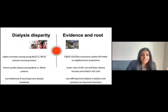In dialysis, the same patterns persist. There is higher mortality among young Black versus white individuals receiving dialysis. Poor quality dialysis has been linked to neighborhood composition and the kinds of resources in certain racial and ethnic minority neighborhoods versus others. The same patterns have been shown in terms of less likelihood of receiving home dialysis modalities.